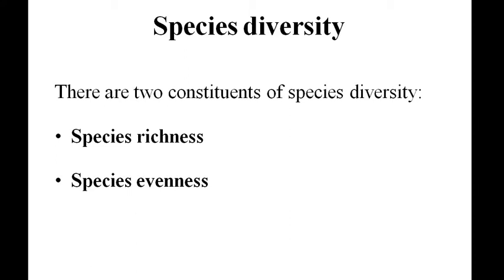Tropical areas have greater species richness as the environment is conducive for a large number of species. Species evenness is relative abundance of individuals of each of those species.